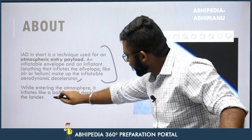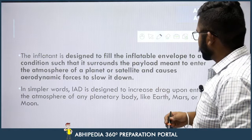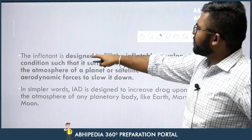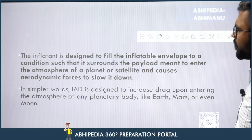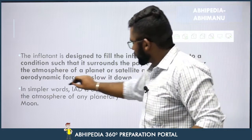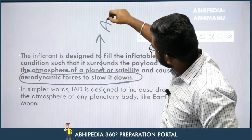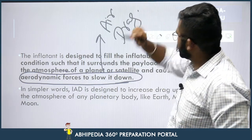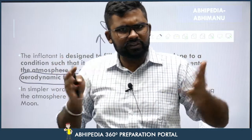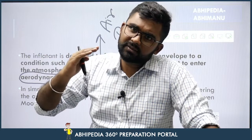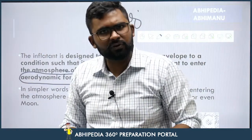While entering the atmosphere, it inflates like a balloon and de-accelerates the lander. Iske through aapko samajh mein aa raha hoga ki ek air drag aayega aur jo payload hai, it will slow down. Air drag is the concept — jaise ki aapke kites udti hain, hawa unn par force exert karti hai aur surface area badha ke maximum column of air ko trap kiya jaata hai, taaki maximum amount of force mile.